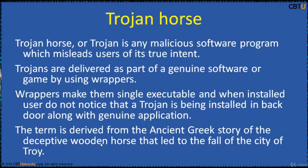A Trojan is any malicious software program which misleads the user of its true intent. Trojans are delivered as part of genuine software or a game by using wrappers. Wrappers make them a single executable, and when installed, the user does not notice that a Trojan is being installed in the backdoor along with the genuine application. The term is derived from the ancient Greek story of the deceptive wooden horse that led to the fall of the city of Troy.